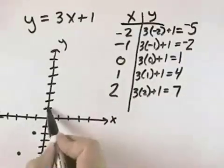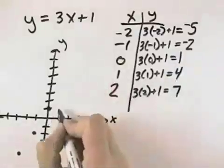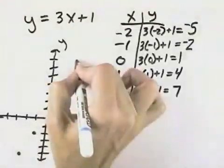When x is 0, we count up for 1, y is 1. When x is 1, y is 4. And finally, when x is 2, y is 7.